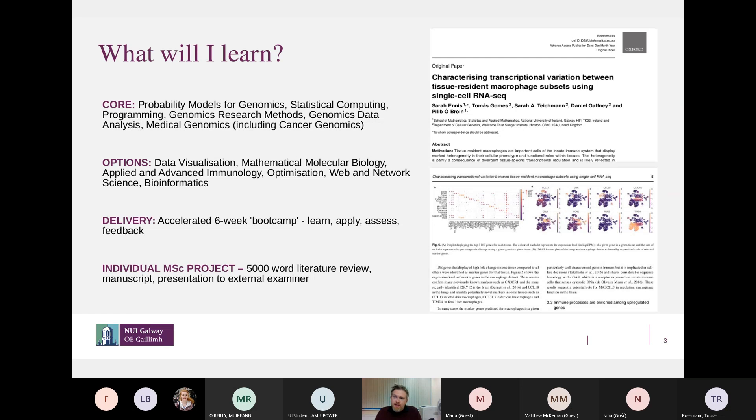And then everyone has the option to take three optional modules in semester two, and they would include things like data visualization, web and network science, bioinformatics and applied and advanced immunology. And again, the options that would be available would be a little bit different. If you're coming from the quantitative background, optimization is an option. If you're coming from a life science background, we'd ask that you take a foundational program in Python programming. So again, the options that are available are tailored to the background on the two programs.